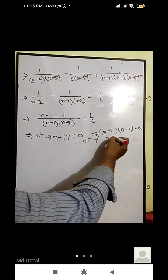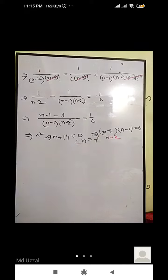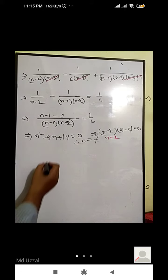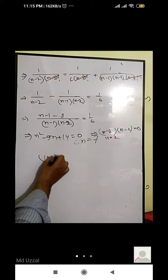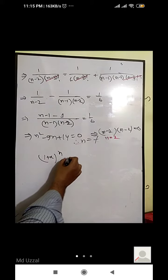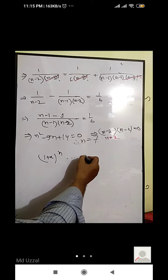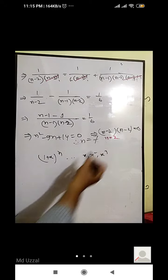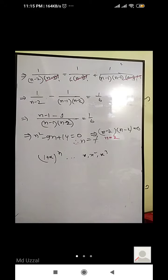n is equal to 2, which is a value. If the number is equal to 24, and the number is equal to 1 plus x to the power n, that is equal to x, x squared, x cube. This is equal to 3.